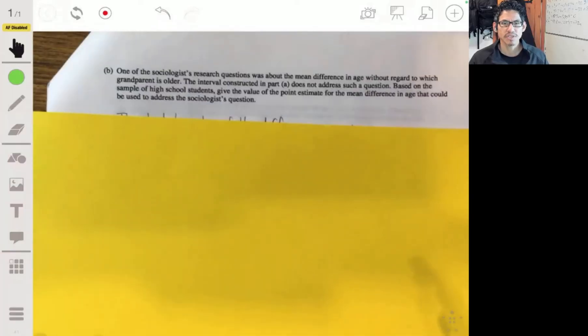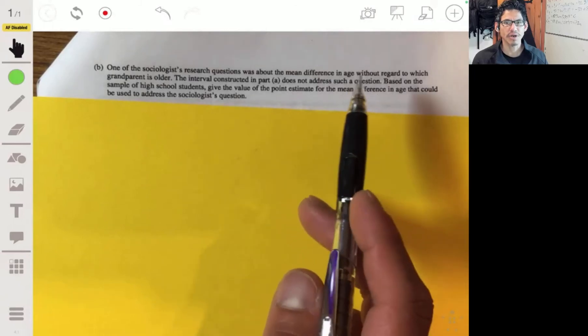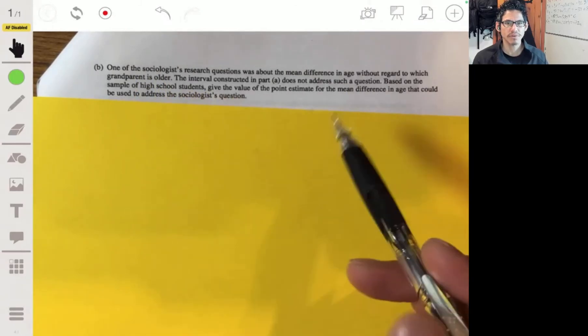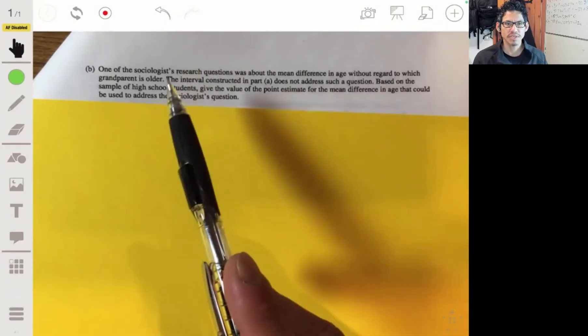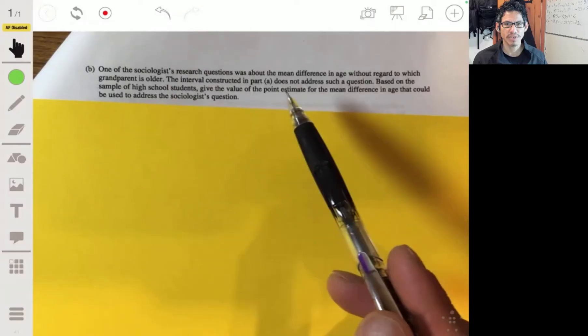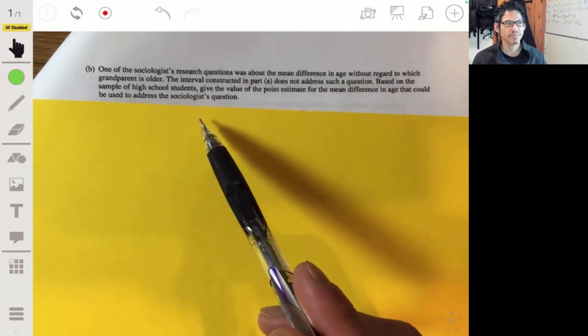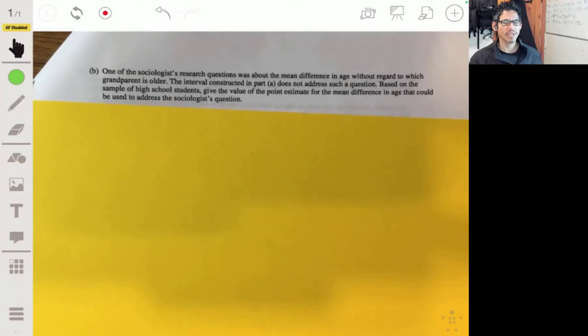This is one of the sociologist's research questions was about the mean difference in age without regard to which grandparent is older. The interval constructed in Part A does not address such a question. Based on the sample of high school students, get the value of the point estimate for the mean difference in age that could be used to address the sociologist's question.